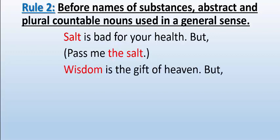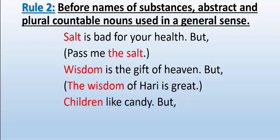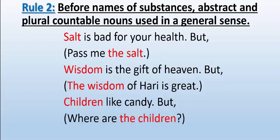Next example: 'Wisdom is the gift of heaven.' Wisdom is an abstract noun used in a general sense, so do not use article. But 'The wisdom of Hari is great' — here we are talking specifically about Hari's wisdom, so we use article 'the.' Similarly, 'Children like candies' — plural countable noun in general sense, don't use article. But 'Where are the children?' uses 'the' because it refers to specific children. In a general sense, we don't use article.